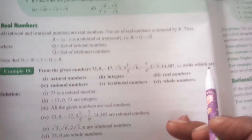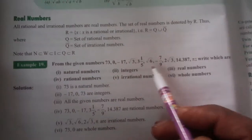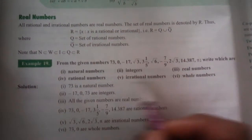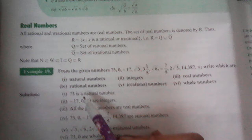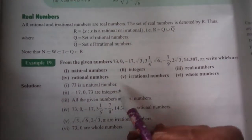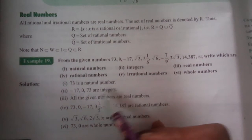Write which are natural numbers, integers, real numbers, rational numbers, irrational numbers, and whole numbers. So -17, 0, 73 are integers. 73 is a natural number.